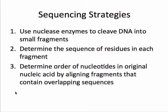To begin with, most sequencing strategies follow three main steps. Genomic DNA is very large, so we have to fragment it — cut it down into smaller, more manageable pieces to sequence. We then have to determine the sequence of the residues in each of those fragments. And most of the time, we have to align fragments like a jigsaw puzzle, finding overlaps to order them into their correct sequences.